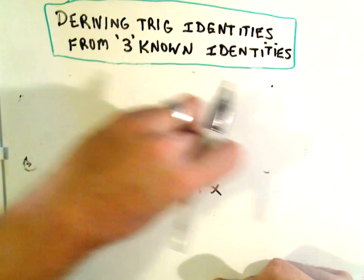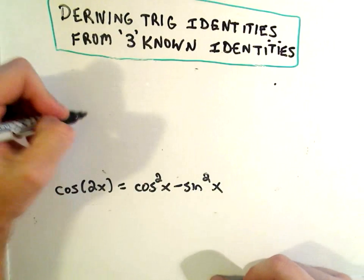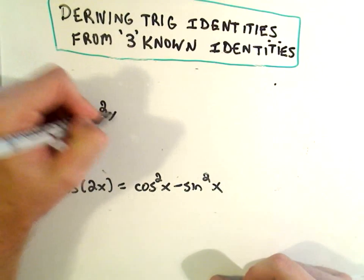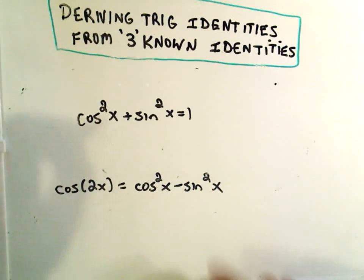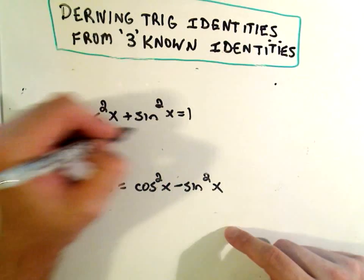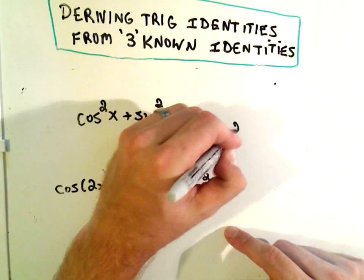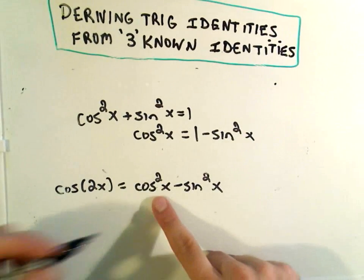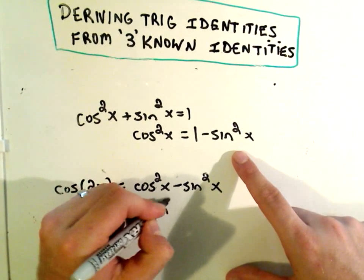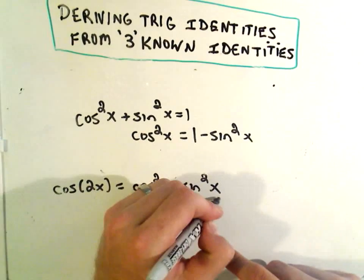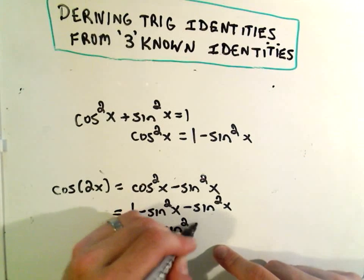But we just saw again an identity that related cosine squared and sine squared—it's the first one we had up there. We said cosine squared x plus sine squared x equals 1. So the idea is now I could solve this, for example. I could say cosine squared x equals 1 minus sine squared x and substitute that in for cosine squared. I'll have 1 minus sine squared x minus another sine squared x, and that gives me 1 minus 2 sine squared x.